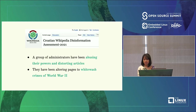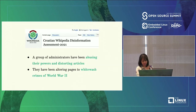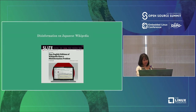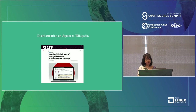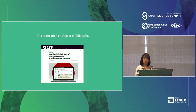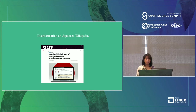I have found a similar pattern on the Japanese Wikipedia and I wrote an article about that for Slate. Politically motivated editors have been abusing their powers and distorting articles very much like the Croatian Wikipedia, and they have been whitewashing war crimes committed by the Japanese military during World War II.